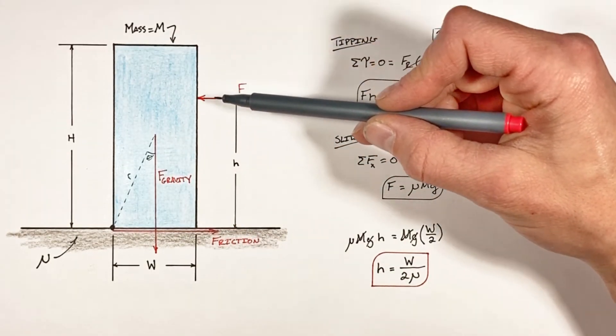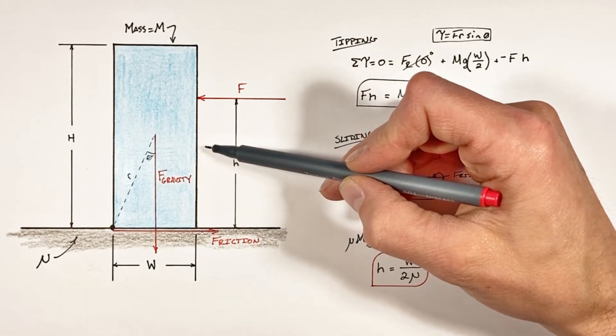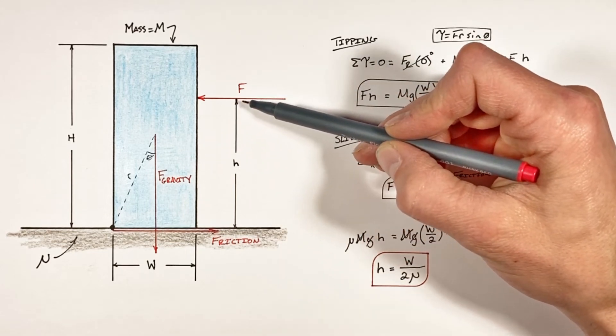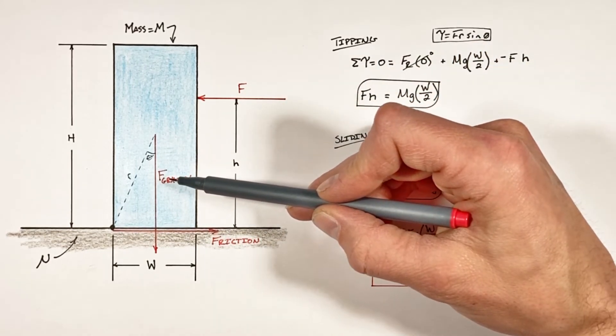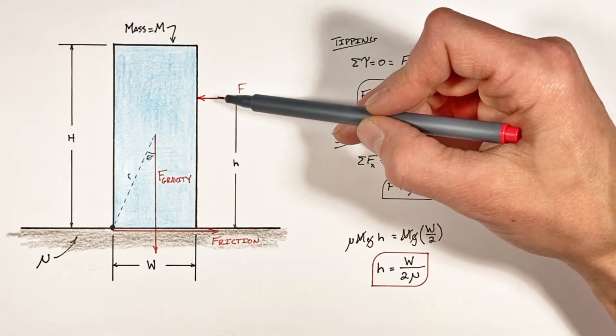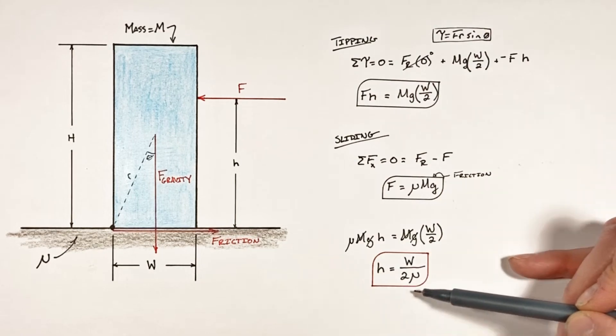So for any height h at which we apply this horizontal force which is less than this value here, the block is going to slide. If we were to apply this force horizontally at some height which is greater than this value, the block is going to tip.